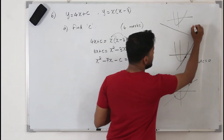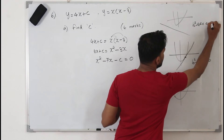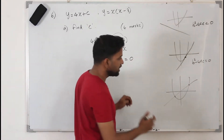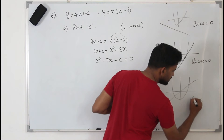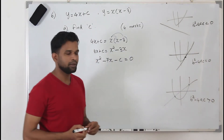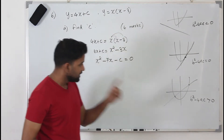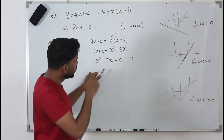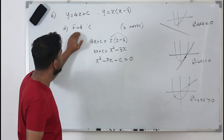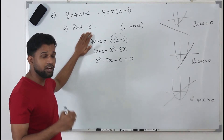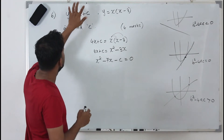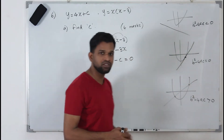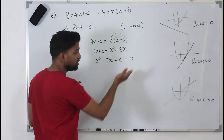If the discriminant b squared minus 4ac is less than 0, the line never touches the parabola. If the discriminant b squared minus 4ac is greater than 0, the line will intercept the curve at two points. Since the question states the line touches the curve at only one point, the condition is b squared minus 4ac equals 0.